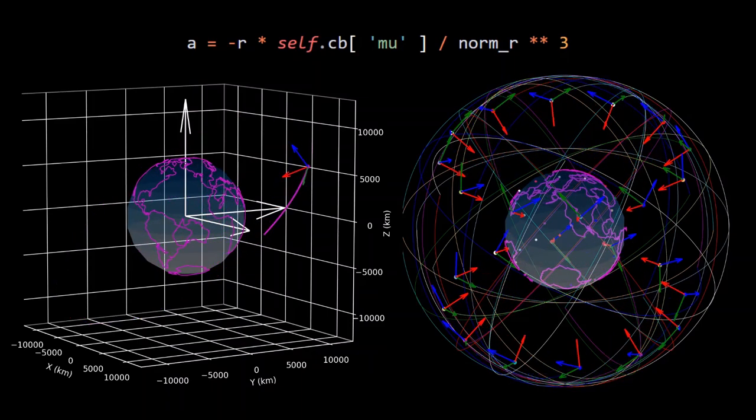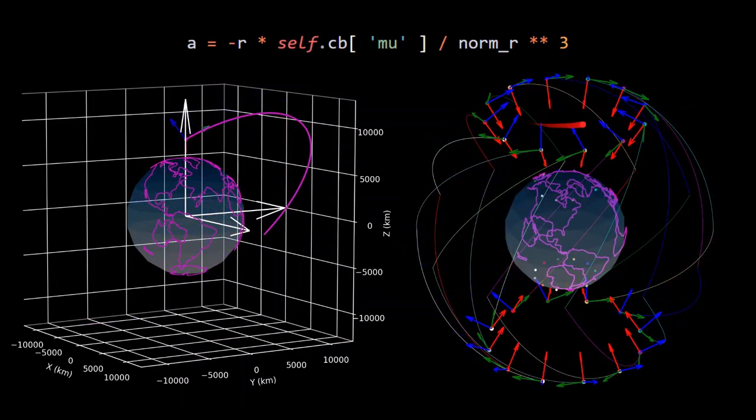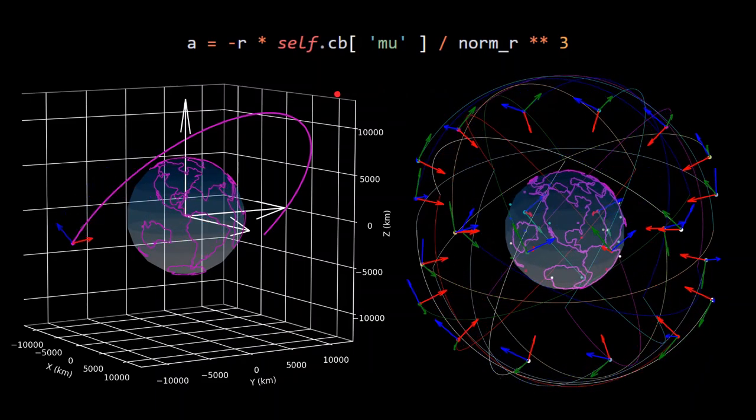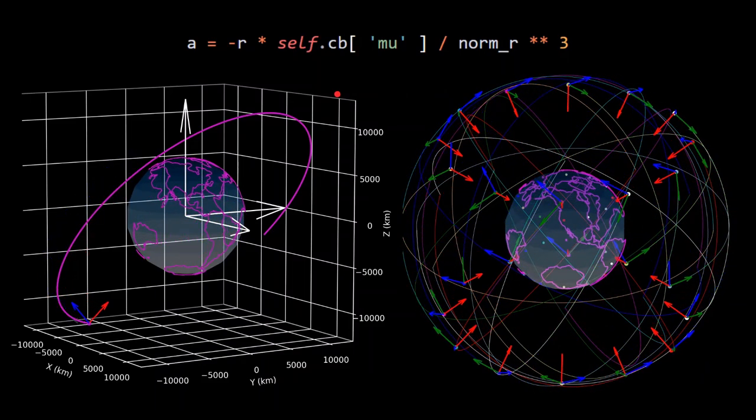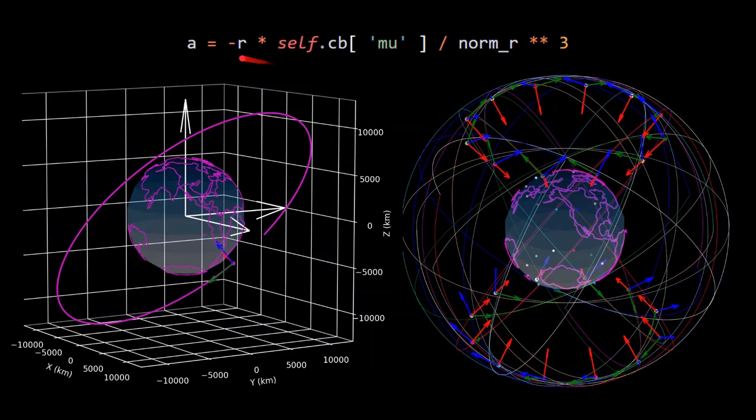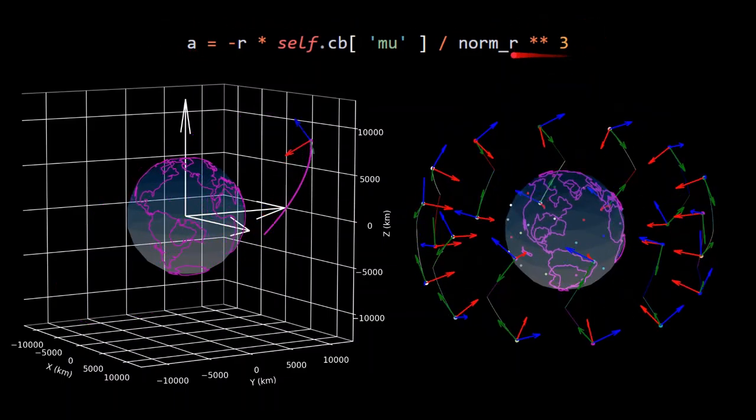Just using this one surprisingly simple equation, we can begin to simulate how bodies move in space. Both of these animations are using two-body dynamics to simulate the spacecraft orbits around the Earth, and they are using Newton's Universal Law of Gravitation in 3D as a vector equation, and it is plugged into Python like so here.